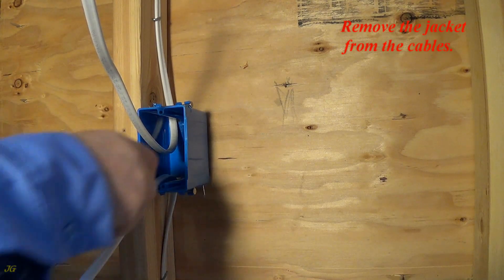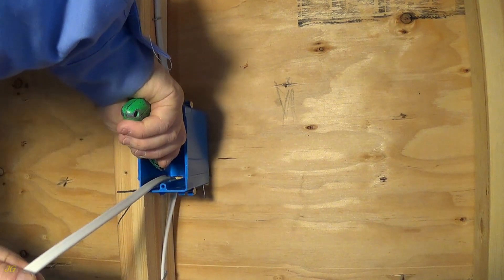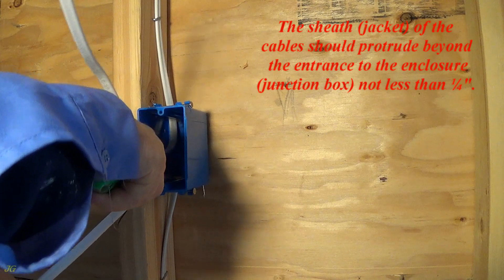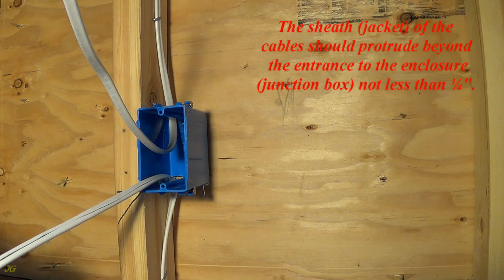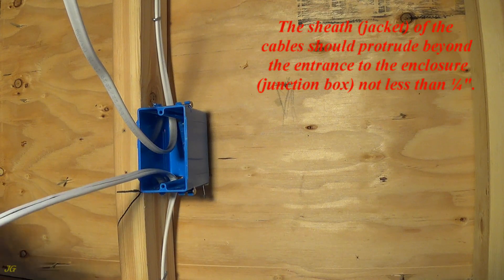Remove the jacket from the cables. The sheath jacket of the cables should protrude beyond the entrance to the enclosure junction box not less than ¼ inch.